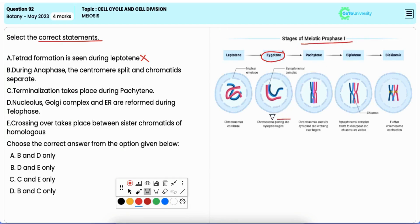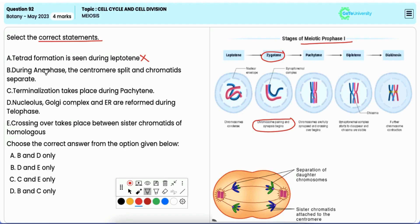Statement B: during anaphase the centromere split and chromatids separate. It is correct. This statement accurately describes the process during anaphase in both mitosis and meiosis. The centromeres do split allowing the sister chromatids to separate and move towards the opposite poles of the cell.